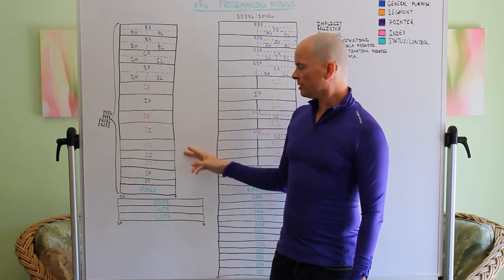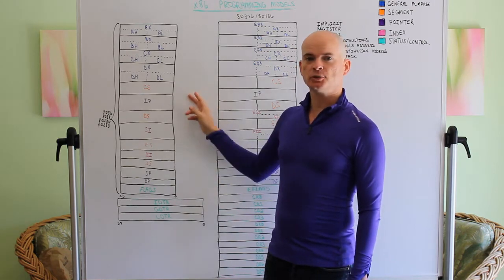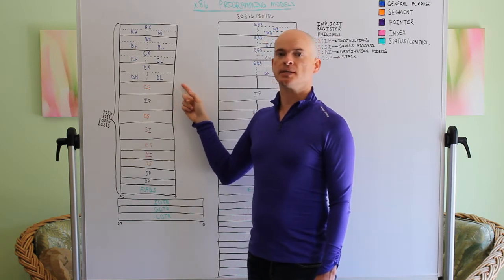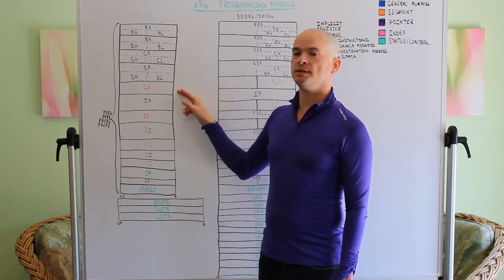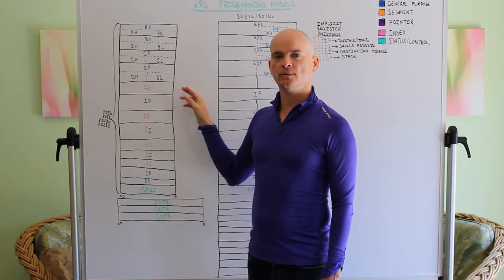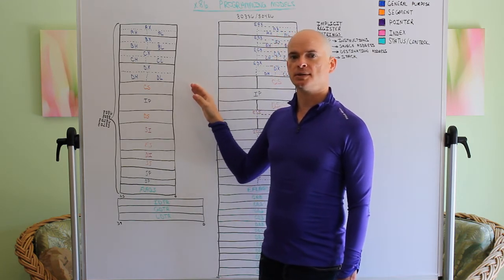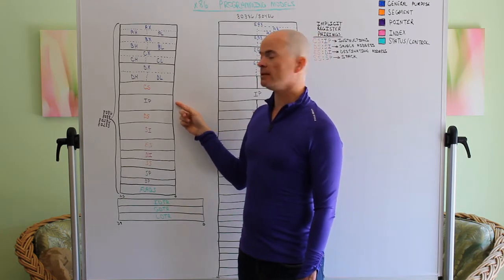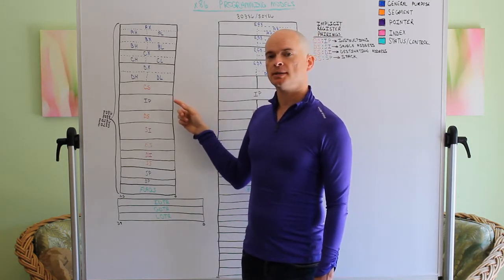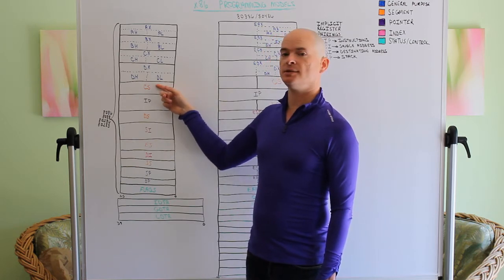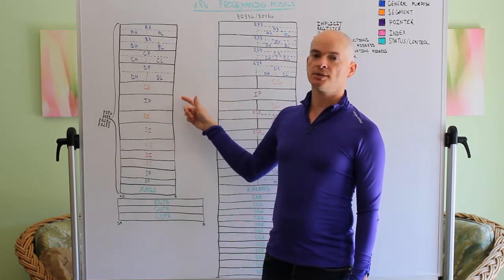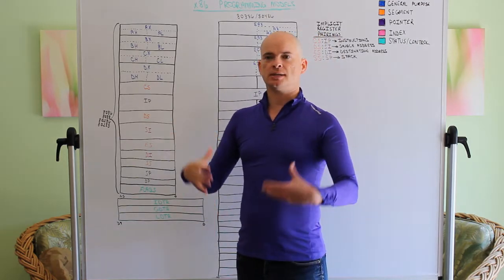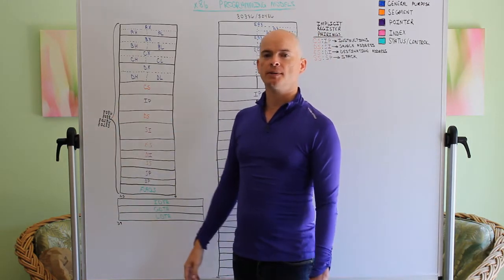Now let's move down here to some registers that have special purposes. We find a segment register called the CS register, the code segment register. This will be the segment from where our processor is executing its code, or program. The IP is the instruction pointer register, this is the offset within this segment that the processor is executing the code. The data segment is just a place where we can put data,